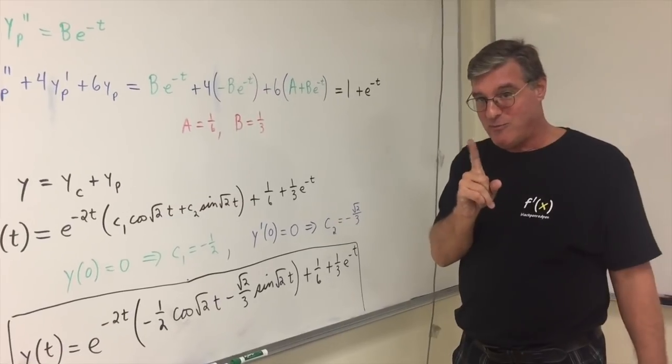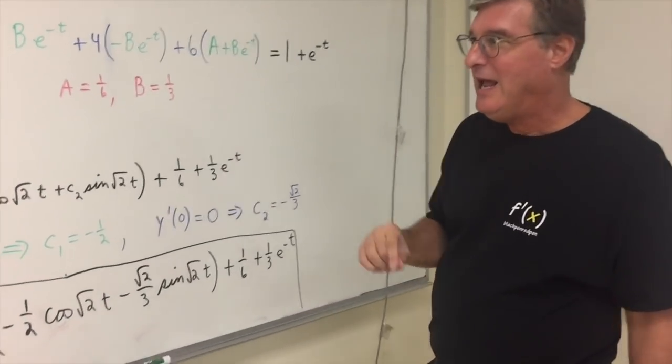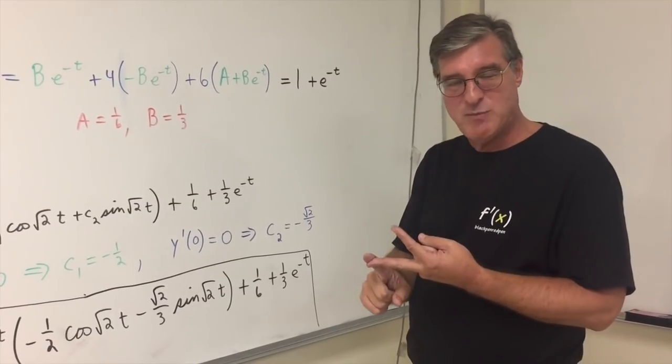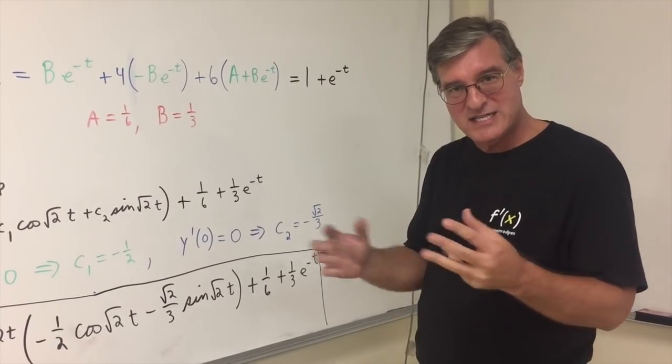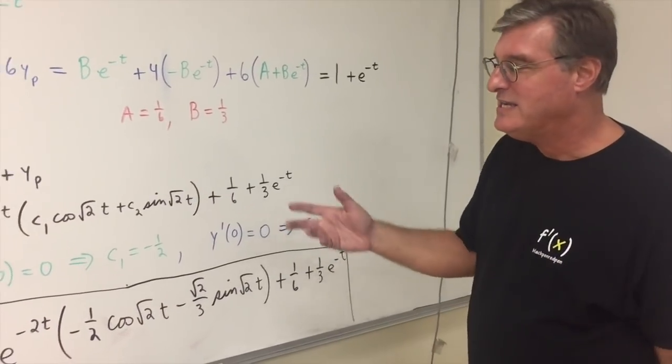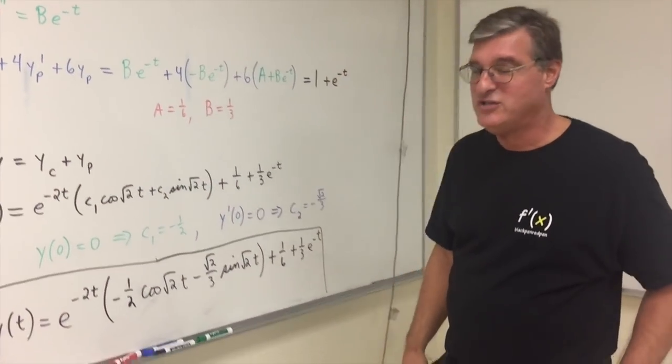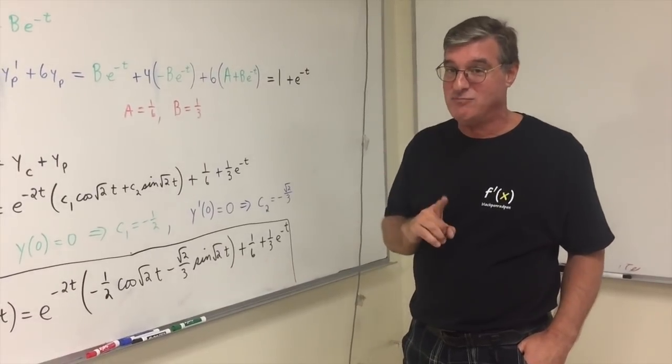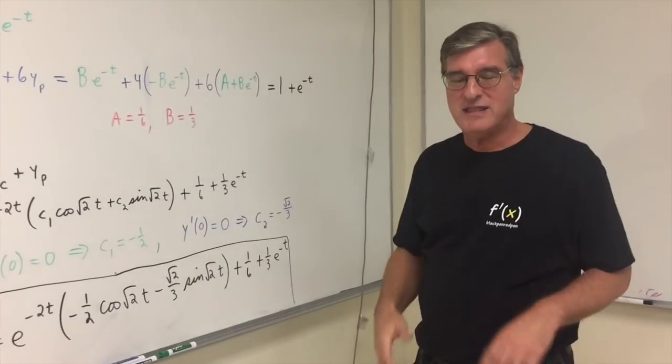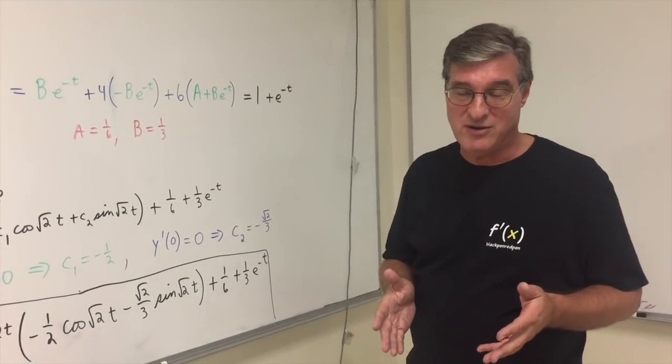Now, you know, remember, it doesn't work all the time. You need polynomials, exponentials, sines and cosines, multiplications and linear combinations thereof. Same thing with the undetermined coefficients method, so keep that in mind. You know, there's another method, as you probably know, to solve these. And that's called the method of variation of parameters.